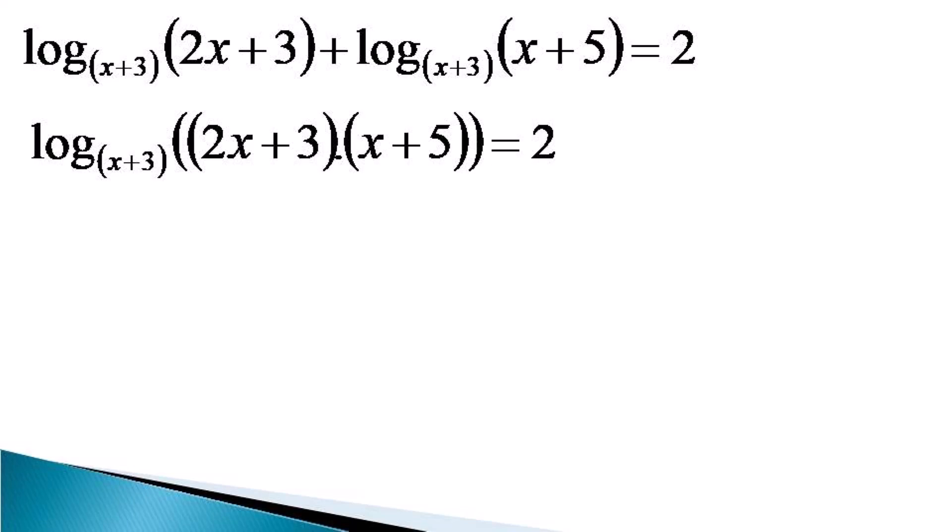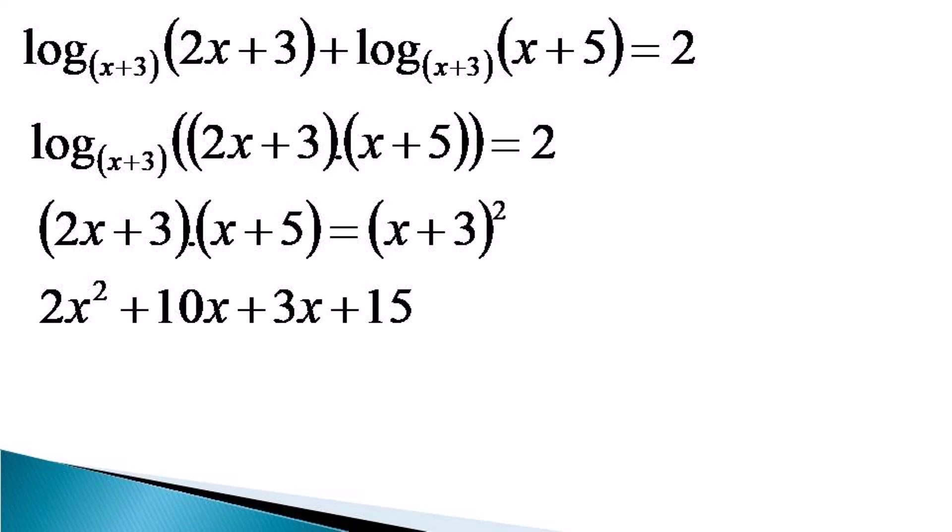Now we make use of the definition of log to get the value of 2x plus 3 into x plus 5 as equal to x plus 3 raised to the power 2. Now we multiply the left hand side to get it as 2x square plus 10x plus 3x plus 15. Expanding the right hand side gives x square plus 6x plus 9.